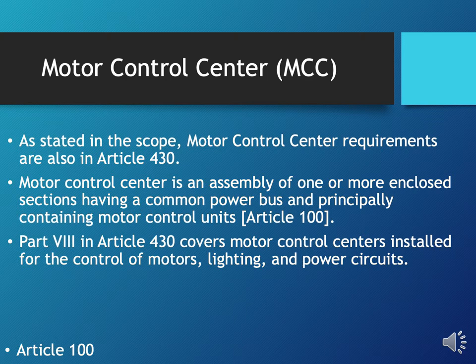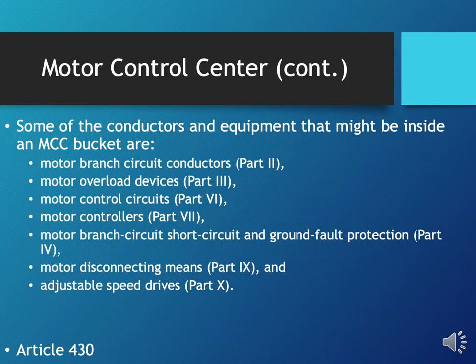Part 8 covers motor control centers installed for the control of motors, lighting, and power loads. Some of the conductors and equipment inside an MCC bucket include motor branch circuit conductors — requirements in Part 2 — motor overload devices in Part 3, motor control circuits in Part 6, motor controllers in Part 7, branch circuit short circuit and ground fault protection in Part 4, motor disconnecting means in Part 9, and adjustable speed drives in Part 10.